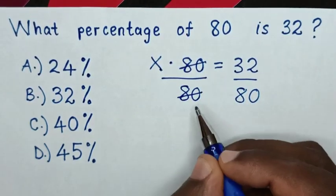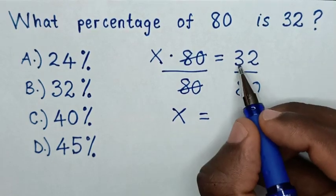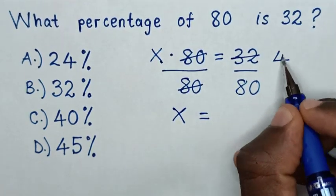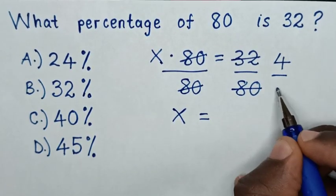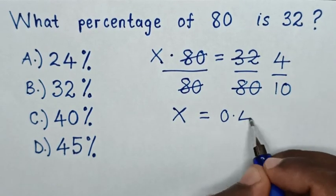So this and this will cancel. Then here it will be X is equal to, to simplify 32 divided by 8 is 4, 8 divided by 8 is 10. Then 4 divided by 10 is 0.4.